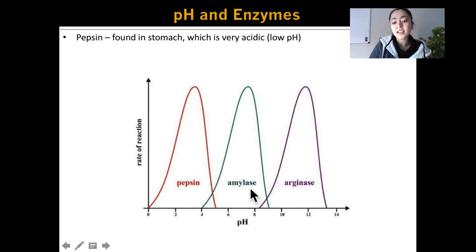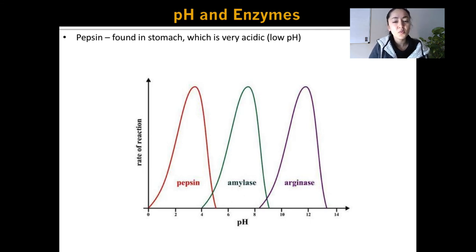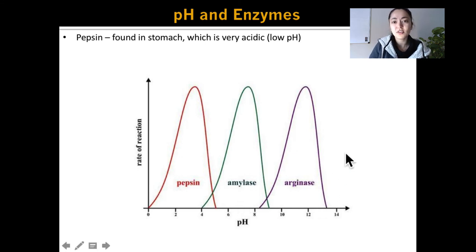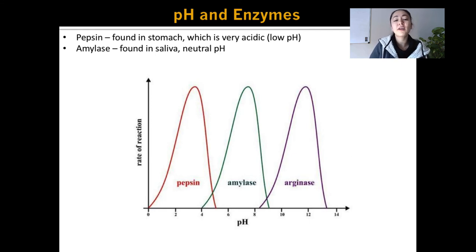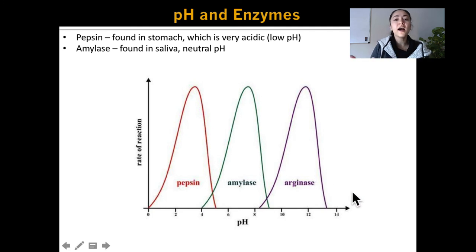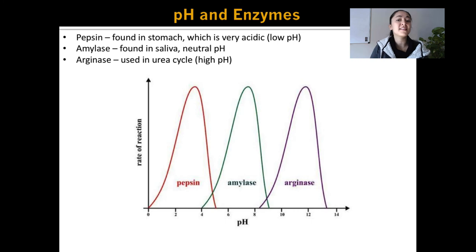Amylase is an enzyme in our body that actually breaks down starch into simple sugars. Amylase is found in a very neutral pH environment — it's actually found in our saliva, which has a very neutral pH around 7. Arginase is found in high quantities in the kidney and prostate; it helps to produce urine as part of our urea cycle, and it's found in environments that are very basic and have a very high pH — so that's where it works the best.